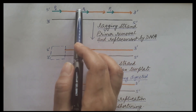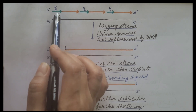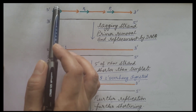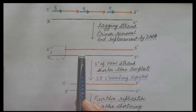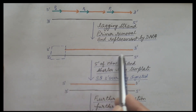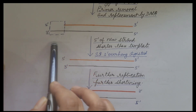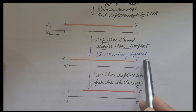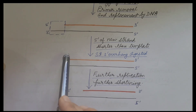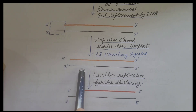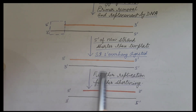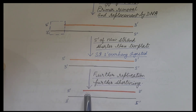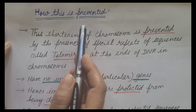However, for the primer at the 5' end, a 3'-OH group is not present, so this gap is not filled. As a result, the new strand is shorter than the template strand, leaving a 3' overhang of single-stranded template, which is digested by nuclease enzyme. The daughter DNA obtained is therefore shorter than the parental DNA, and with each replication, daughter DNA becomes shorter and shorter until eventually it is lost.